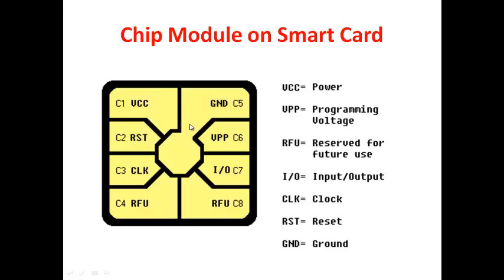The contact pad has several pins. You have a ground pin, a VCC pin (the power supply required for the embedded system to operate), and a reset pin — which restarts the system from the beginning. When a bank writes your authentication code into the smart card, it uses this reset/program pin by supplying voltage so the content is written.